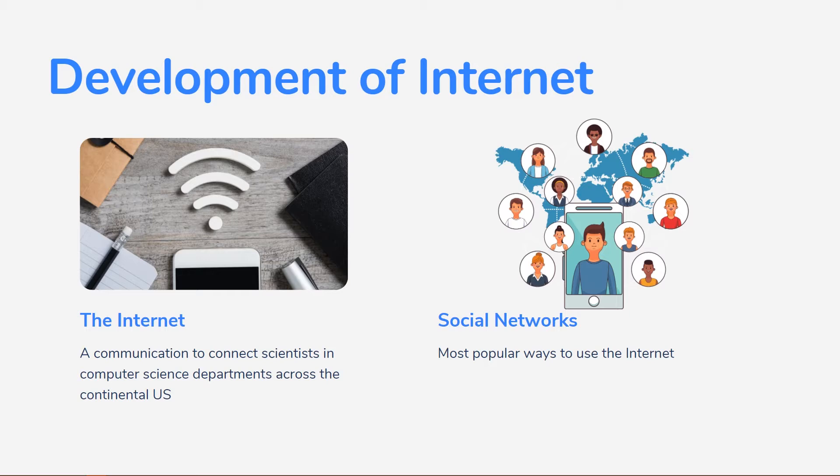The initial online community consisted of a relatively small number of web enthusiasts interested in technology, politics, literature, and ideas. Currently, joining a social network is one of the most popular ways to use the internet. More than two-thirds of all internet users worldwide — about 2.3 billion people — use social networks. Facebook has over 1.7 billion active users and over 1.5 billion monthly mobile users.